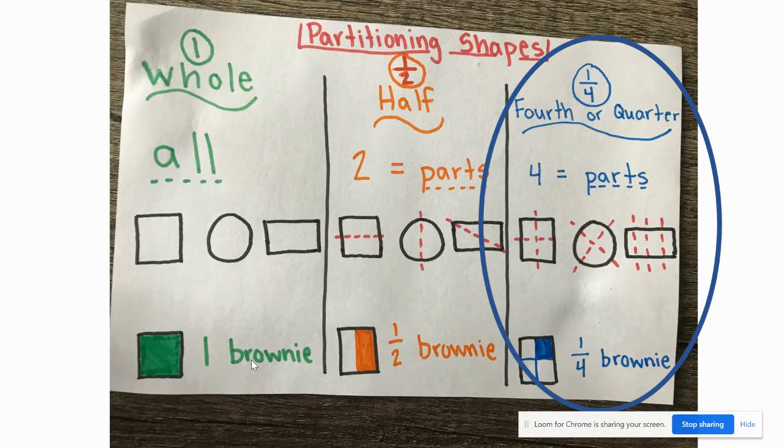We know that if we have a whole, we're talking about all of that shape. If we have halves, we're breaking that shape into two equal parts. And with fourths or quarters, remember we can use those words interchangeably, they mean the same thing, we are breaking or partitioning our shape into four equal parts.